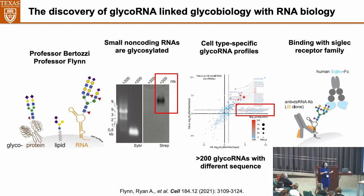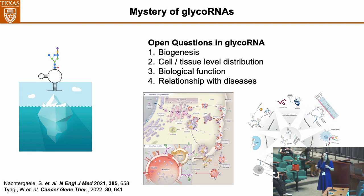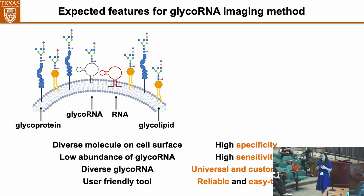But what we know right now is only a small piece of the iceberg. Currently in this field, there are a lot of open questions — for example, how glycoRNA is generated, what's their distribution on cells and tissues, what's their biological function, and what's their relationship with disease. To answer these questions, we need a very powerful tool. For example, if we can provide a camera to directly see the glycoRNA on the cell surface, that can help answer a lot of questions.